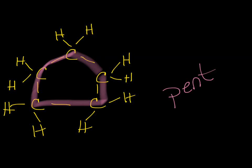So the prefix for five is pent, all single bonds, so it's a pentane. However, it's a ring, right? So we have to add the prefix cyclo. So this guy will be cyclopentane.